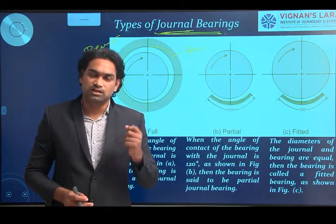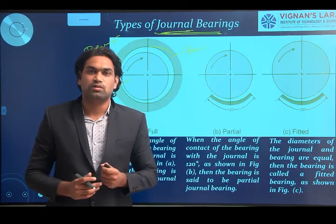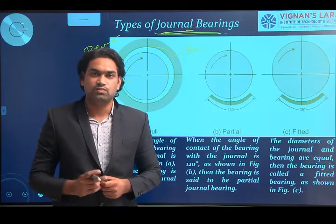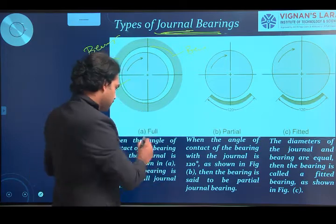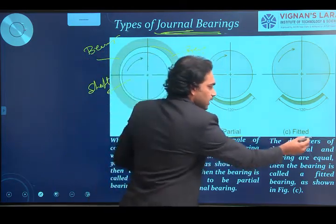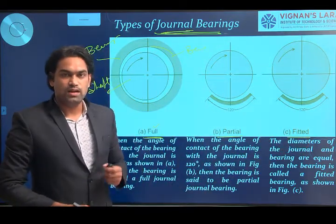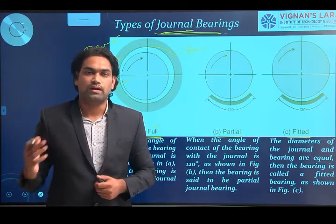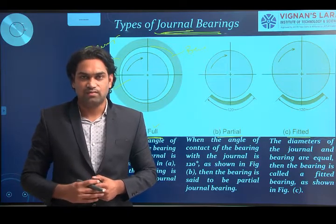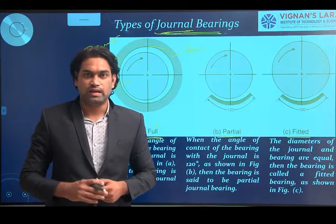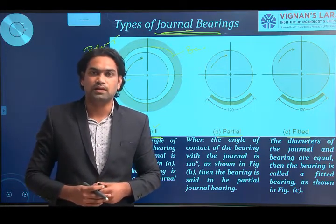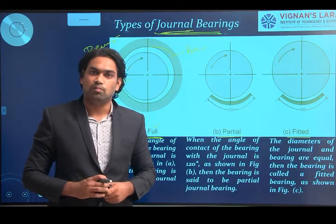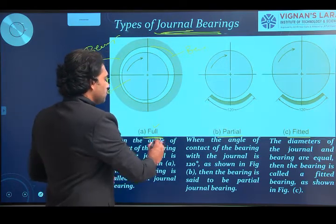Journal bearings can also be classified based on the arc of contact between the bearing surface and the shaft surface into three types: full journal bearing, partial journal bearing, and fitted journal bearing. In a full journal bearing, the arc of contact is 360 degrees — the journal is completely enclosed by the sleeve. In a partial journal bearing, the enclosure is only 120 degrees — the shaft is partly enclosed by the sleeve.